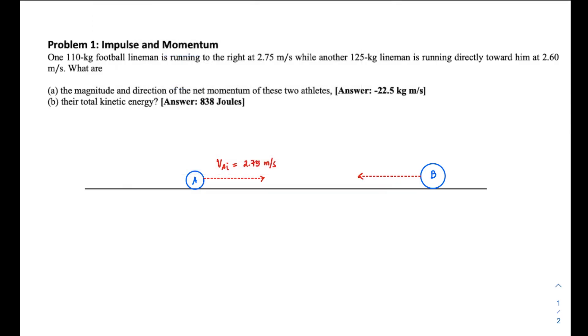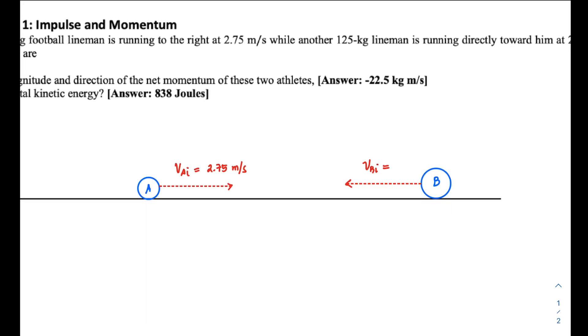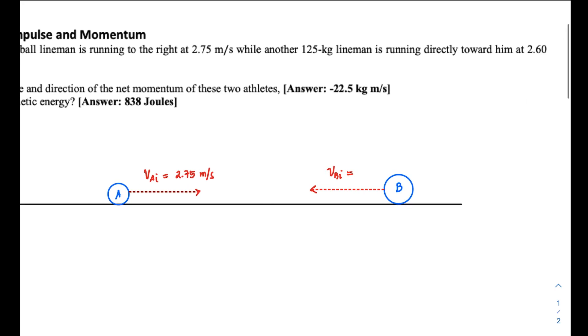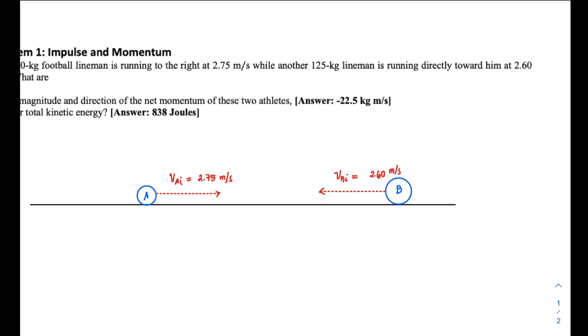case, object B is the 125-kilogram lineman moving at 2.60 m/s. Since it's going towards the left, you have to properly indicate this with a negative sign.